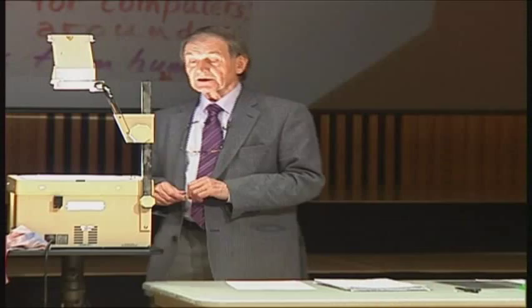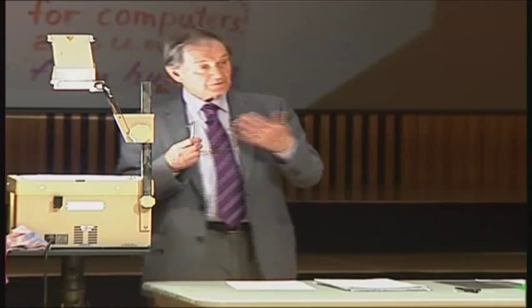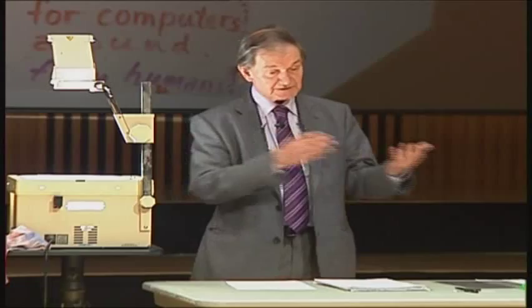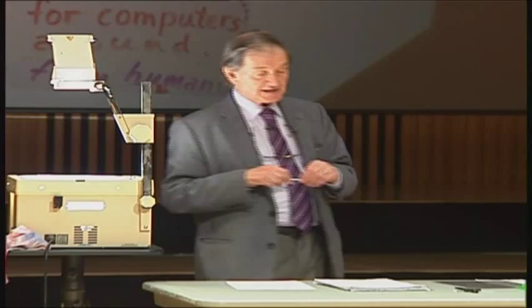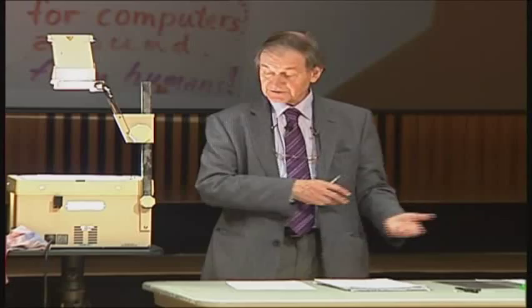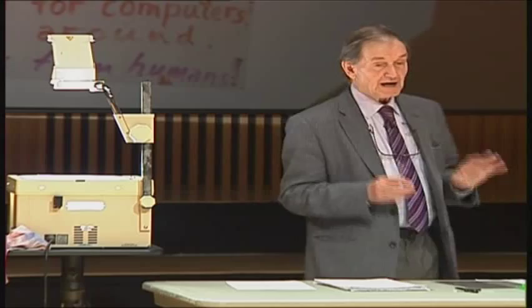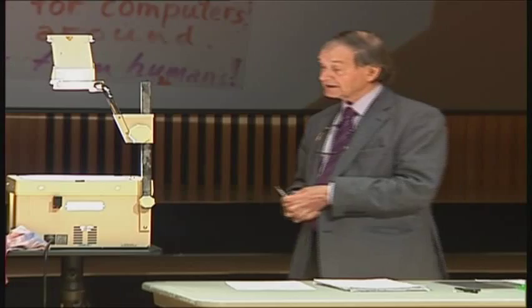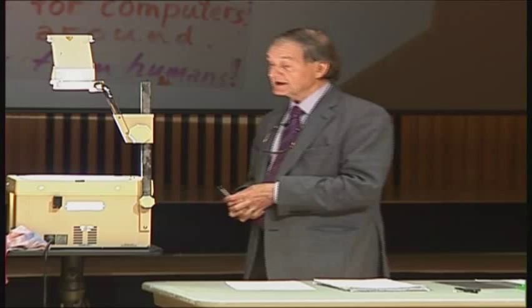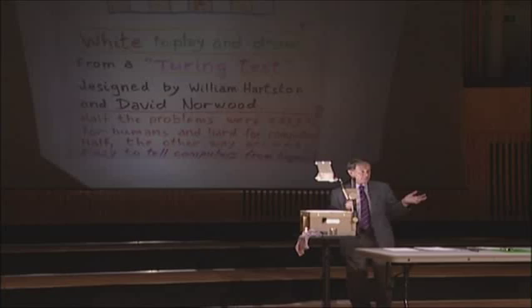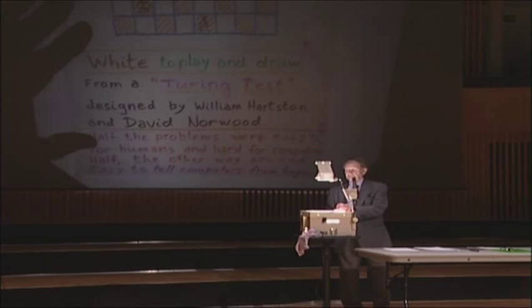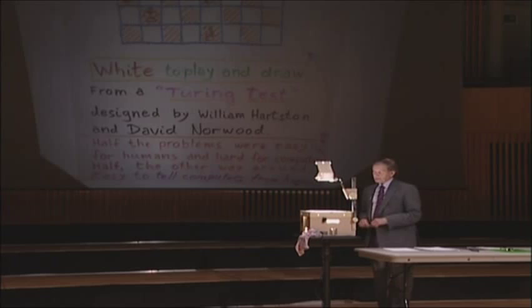Let me first give you an example. This is a chess position, really one of a whole series designed by William Hartston and David Norwood. It was a sort of Turing test — the idea being whether you can distinguish the abilities of a computer from those of a human being. In this test, half the problems were designed to be easy for human beings and hard for computers, and the other half were designed to be easy for computers and hard for human beings. This particular problem was designed to be easy for humans and hard for computers.